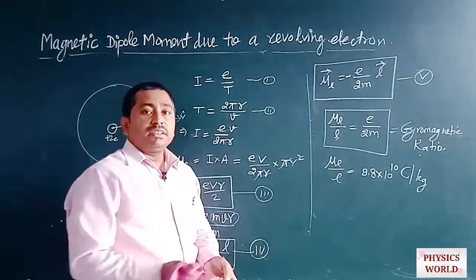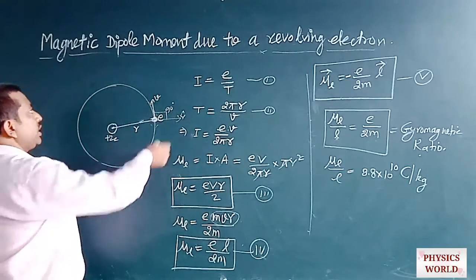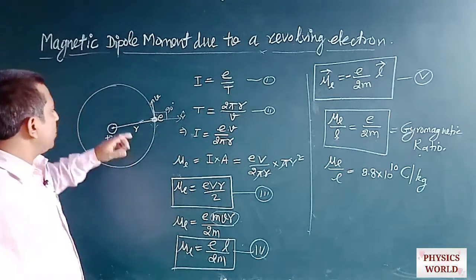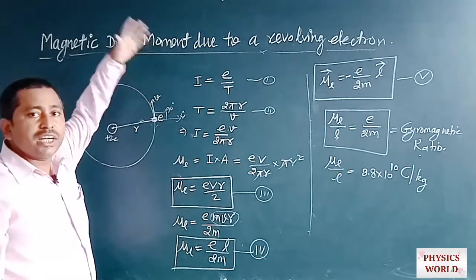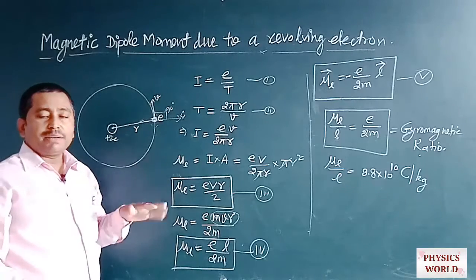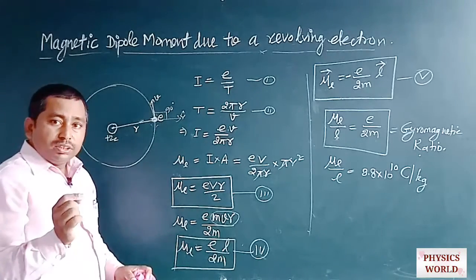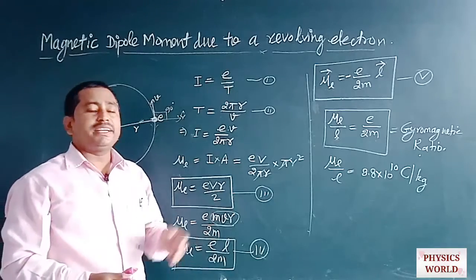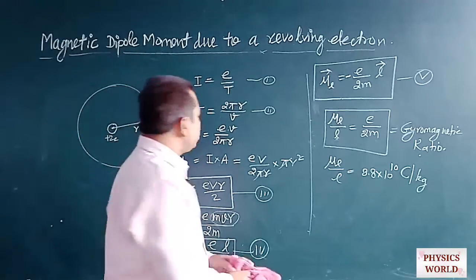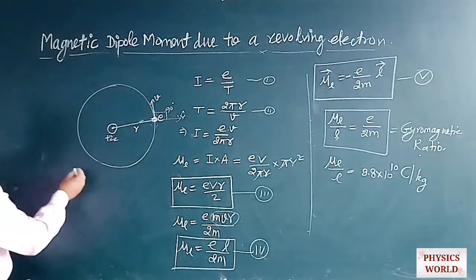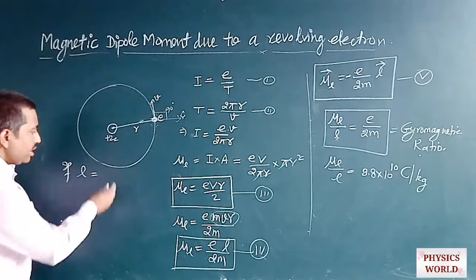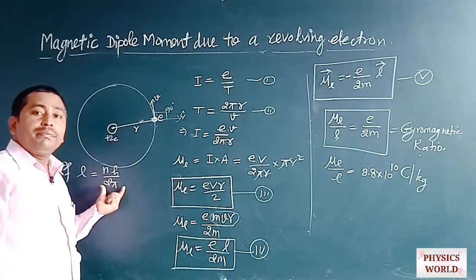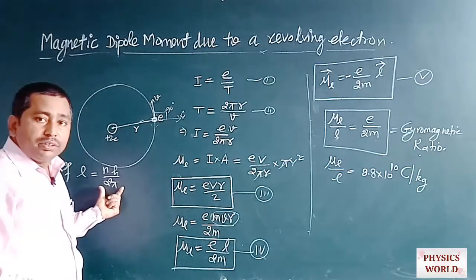According to Bohr, there are several orbits — K, L, M, N — with the first orbit having 2 electrons, the second orbit 8 electrons, and so on. For the electron in the first orbit of hydrogen, the angular momentum L = nH / (2π), as provided by Bohr's postulate from 1913. This concept enabled Ampere to describe the magnetic moment of atoms and classify them based on magnetic properties.